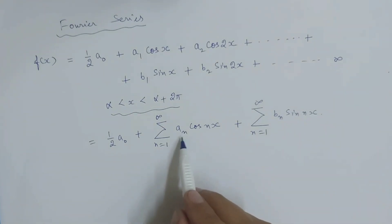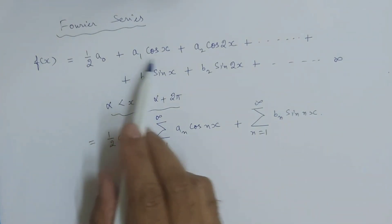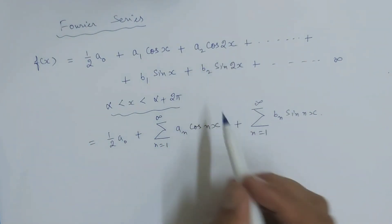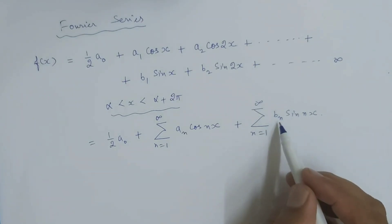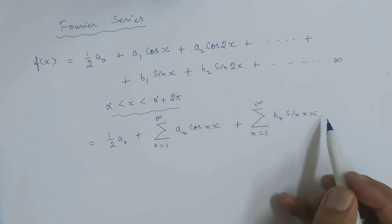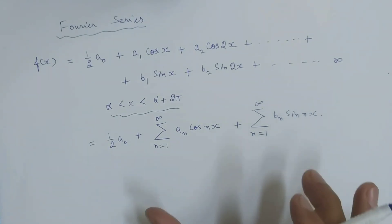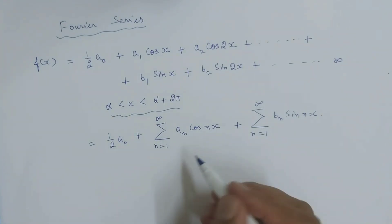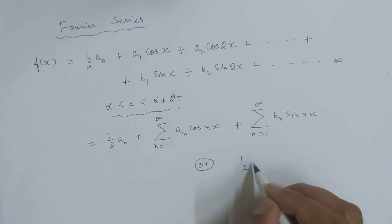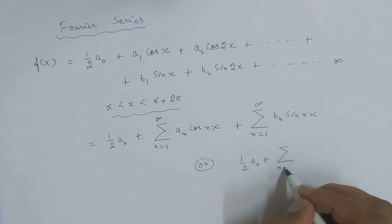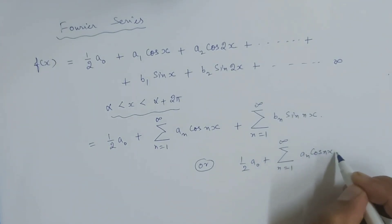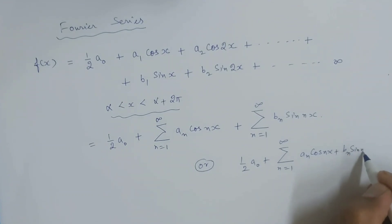यहाँ पर देख सकते हैं: when n=1 we find a1·cos(x), when n=2 we find a2·cos(2x). Similarly, for n=1 we find b1·sin(x), b2·sin(2x) for n=2, plus up to so on. This is the simplest form of Fourier series. It can be written as (1/2)·a_naught plus sigma n=1 to infinity of [a_n·cos(nx) + b_n·sin(nx)].